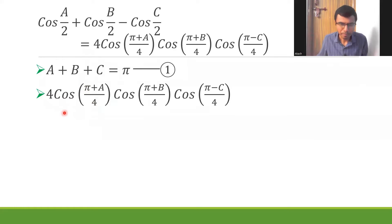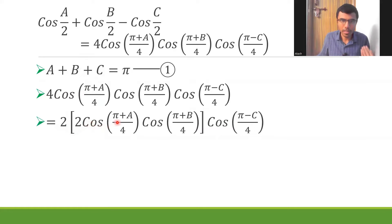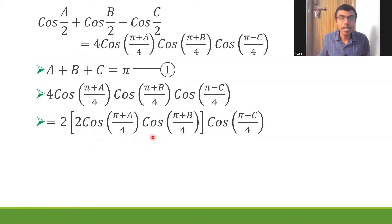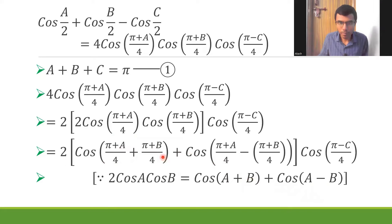Now what I'm going to do is write this 4 as 2 × 2, and group these terms: 2·cos(π+a/4)·cos(π+b/4), and then cos(π-c/4). This is of the form 2·cosA·cosB, and 2·cosA·cosB = cos(A+B) + cos(A-B). In place of A and B I have (π+a/4) and (π+b/4).